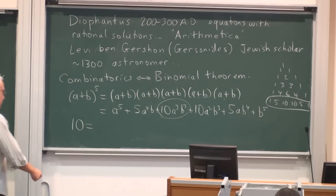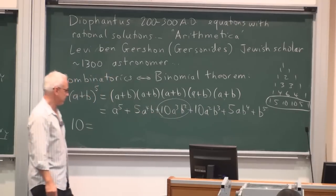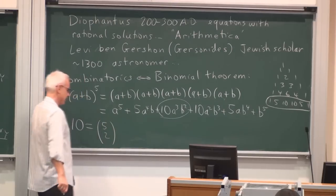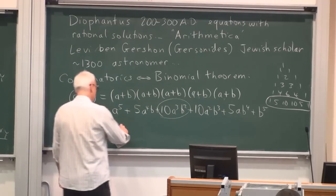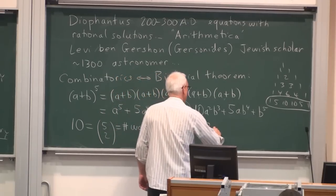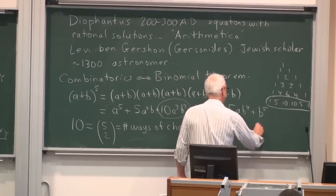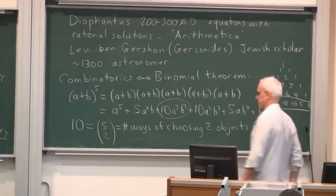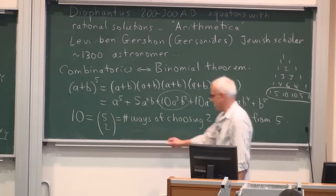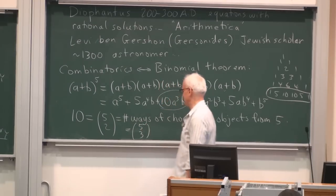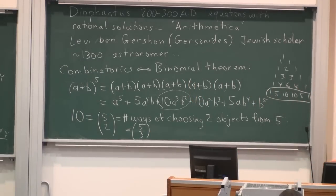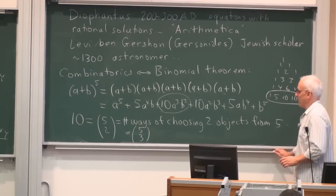So this 10 was the number of ways that you can choose, say, two b's out of the five brackets. All together, we're going to get three a's and two b's, and if we know where the b's are coming from, then the a's are coming from the other ones. So it suffices just to worry about which brackets are going to contribute the b's. Well, how many ways are there of choosing two brackets out of the five? That's one way, two, three, four, five, six, seven, eight, nine, ten. Those are the 10 different ways of choosing two out of the five brackets.